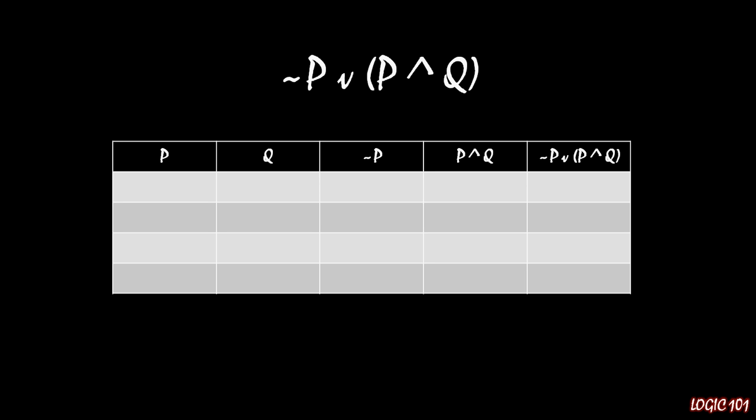Before we finish with the biggest statement possible, which is just the original statement, not P or P and Q. So that gives us five columns total.